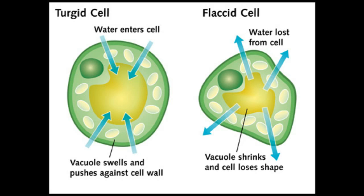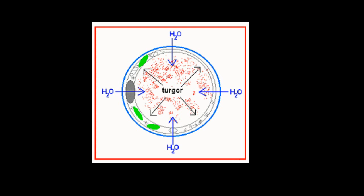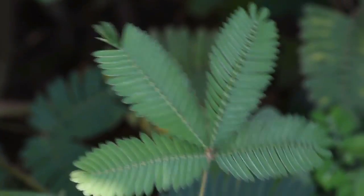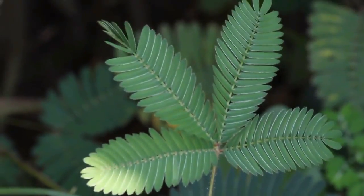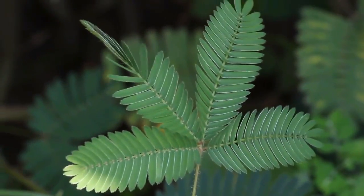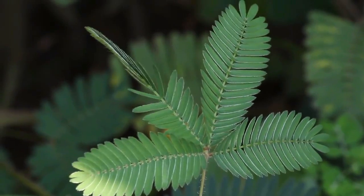This makes the cell lose turgor, which is the force applied by the water onto the wall of the cell. Due to this loss of force, the cell collapses, resulting in the folding up of the leaves of the touch-me-not plant, aka Mimosa pudica.